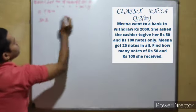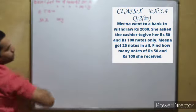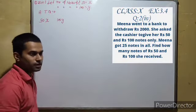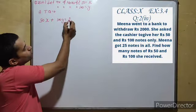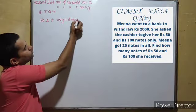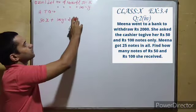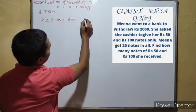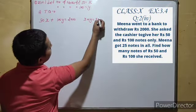Similarly, 100 times y, the number of 100 rupee notes, gives the total value of 100 rupee notes. The total number of notes, x plus y, is equal to 25. This is our condition number 2.